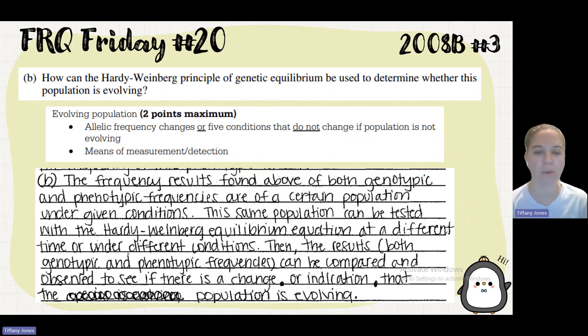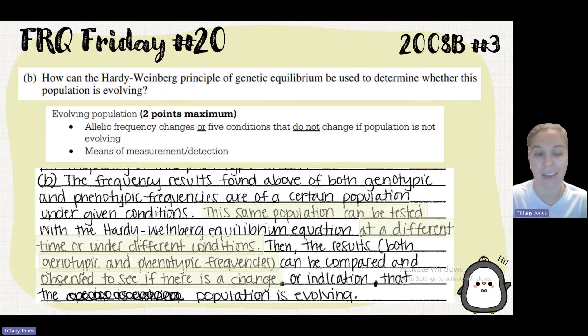So a student says, the same population can be tested with the Hardy-Weinberg equilibrium equation at different times or under different conditions. Then the results, both genotypic and phenotypic frequencies can be paired and observed to see if there is a change or indication that the population is evolving.